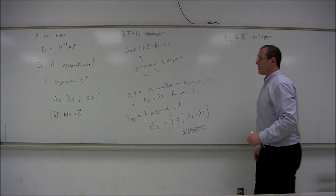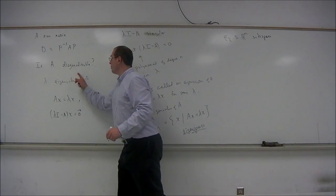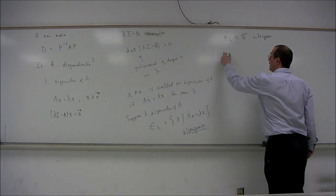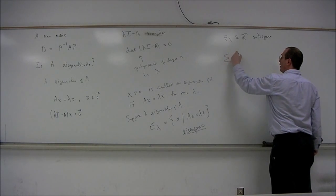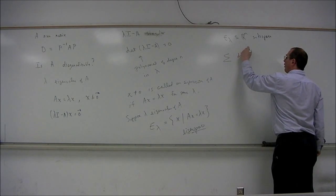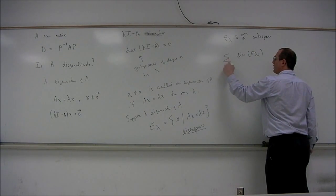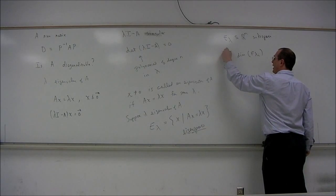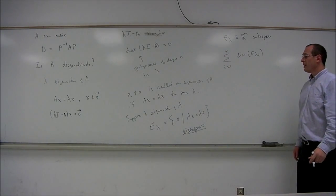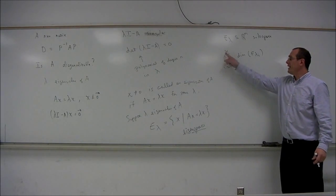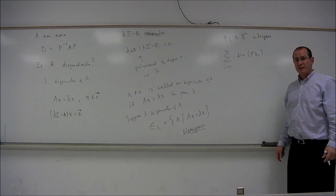So returning to the question of, is A diagonalizable, if we take the summation of the dimensions of all of the eigenspaces, so I'll call them E sub lambda I, where I is 1 to K, so I'm assuming here that the matrix A has K different eigenvalues.